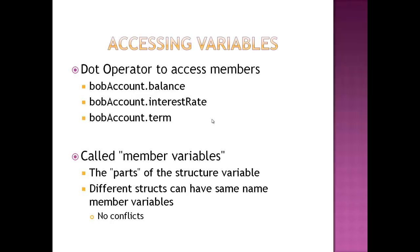We put a dot operator to access those member values — BobAccount.Balance, BobAccount.InterestRate, and BobAccount.Term. The things inside — balance, interest rate, and term — are our member values; they're parts of the structure variable. Because of this, we can have different structures with the same variable names. We can have BobAccount.Balance and FrankAccount.Balance. We can have CDAccountV1 and CDAccountV2, and those could both have a balance variable inside there.